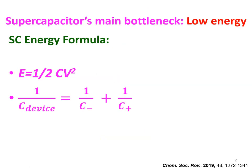The main bottleneck of supercapacitors is their low energy content. As you know, the first equation shows the energy of supercapacitors. Two important parameters determine the amount of energy: capacitance and voltage. The second equation shows the relation between capacitance of the device and the two electrodes. Both electrodes contribute to the device capacitance, and the bottleneck is the electrode with low capacitance.